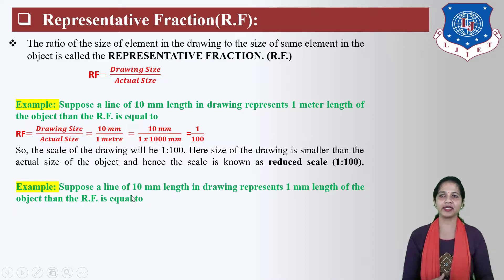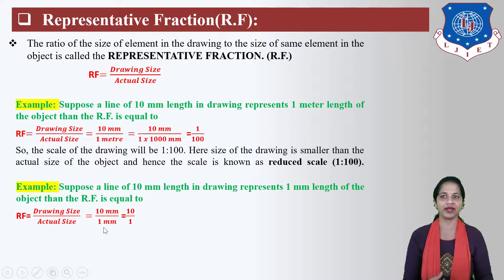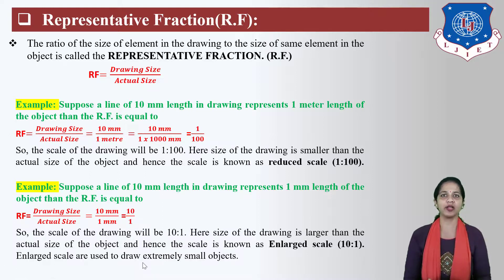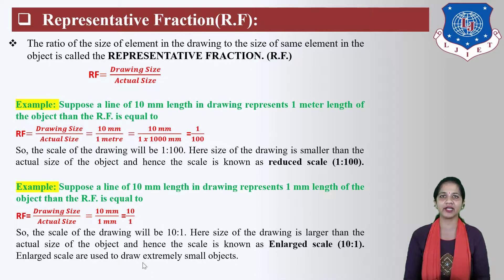Next example. Suppose a line 10 mm in length in the drawing represents 1 mm length of the object. Then RF is equal to drawing size divided by actual size. Here, drawing size is 10 mm and actual size is 1 mm, so RF equals 10 upon 1. The scale of the drawing will be 10 to 1. Since the size of the drawing is larger than the actual size, the scale is known as Enlarged Scale 10 to 1. Enlarged scale is used to draw extremely small objects, and for finding enlarged or reduced scale value, we use Representative Fraction RF.